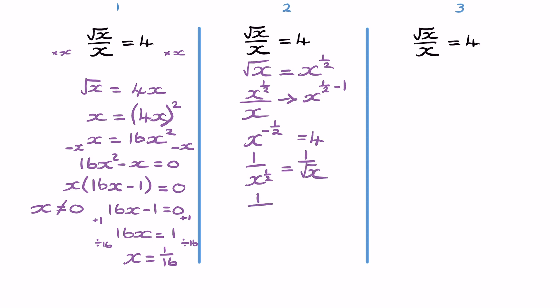So 1 over root x equals 4. And now we're going to turn those into the reciprocals by multiplying by root x and dividing by 4 on both sides. So that leaves us with 1 over 4 equals root x.